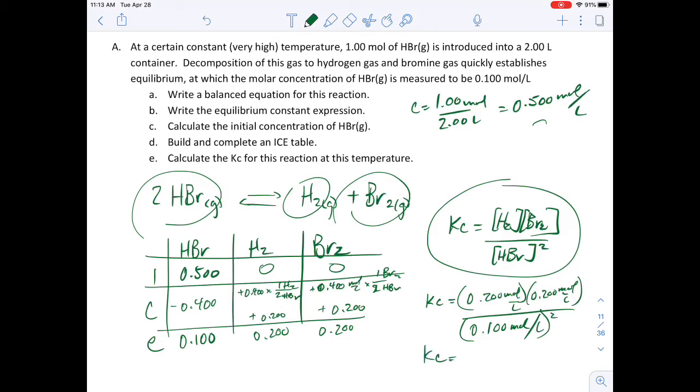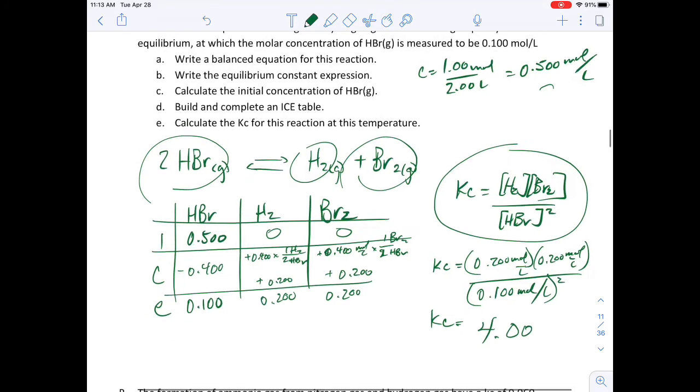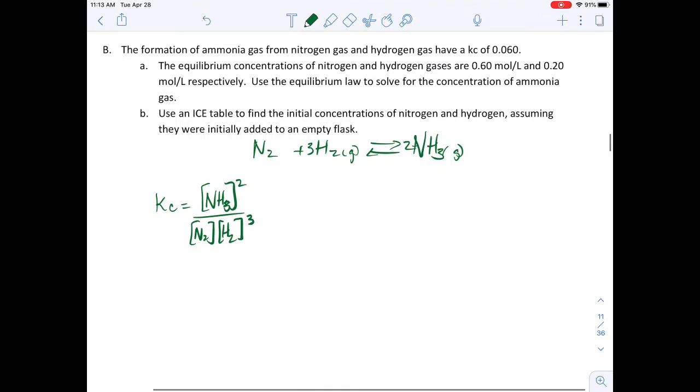And so I'm going to come out with an equilibrium constant of 4.0. And because all of my values had three sig figs, this also had three sig figs. So that's a quick nice little ICE question to remind us.